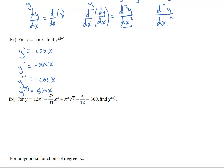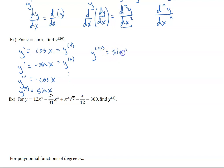So what this means is the fifth derivative is going to be the same as the first, the sixth the same as the second, and so on — seventh, eighth — and then we find that every fourth derivative we go back to the original function. Now this only happens with sine and cosine, but any derivative that is a multiple of four has a derivative equal to itself. So since 20 is divisible by four, the 20th derivative of sine of x is equal to sine of x.